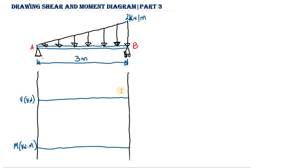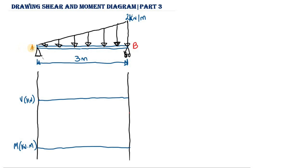Whenever you want to draw a shear and bending moment diagram, the first thing you need to do is calculate the support reactions, because this is going to help you draw the diagram. We have a pin support at point A and a roller support at point B. The horizontal reaction at point A is automatically equal to zero because we don't have any horizontal force acting on this beam.